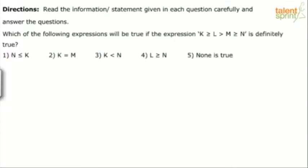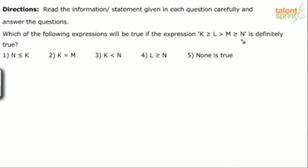Next question. Which of the following expressions will be true if this is definitely true? So this is the statement; which of these conclusions are correct is the question. n less than or equal to k — no, n cannot be less than or equal to k. n will be less than k; it cannot be less than or equal. n will be less than k — it cannot be less than or equal.